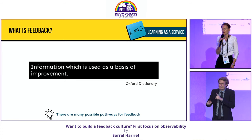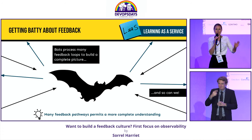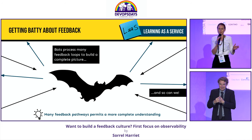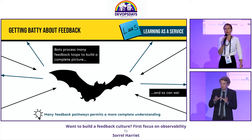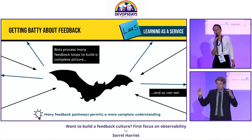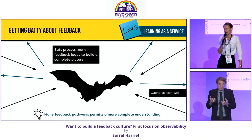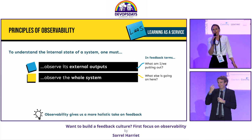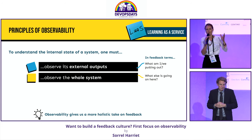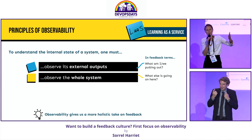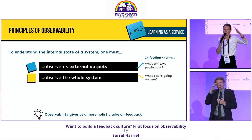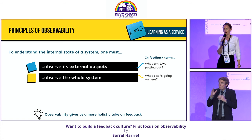So I thought, let's get a bit more batty about feedback. Bats, of course, process many feedback loops to build a complete picture of their environment — and so can we. This alludes to the systems thinking talk earlier, and it made me think about observability. I really enjoy the parallel here with the principles of observability.